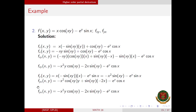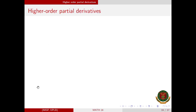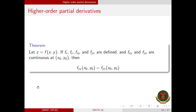So the question now is, is that always the case? Is f_xy always equal to f_yx? In this next theorem, if certain conditions are satisfied, then we are guaranteed that f_xy is equal to f_yx.